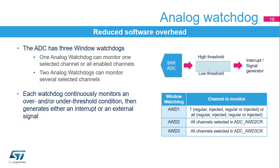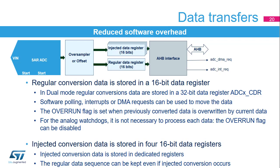Each ADC has three integrated analog watchdogs with high and low threshold settings. The ADC conversion value is compared to this window threshold. If the result exceeds the threshold, an interrupt or external signal can be generated, or a timer can be immediately stopped without CPU intervention. The ADC conversion result is stored in a 16-bit data register. In dual mode, two samples are combined into a 32-bit register called ADC-X-CDR, thus minimizing the number of transactions on AHB. The system can use CPU polling, interrupts, or the DMA controller to make use of the conversion data.